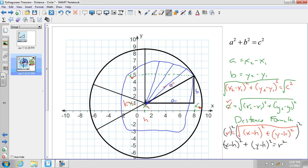So that is how the Pythagorean theorem is related to the distance formula, which is related to the standard form of the equation of a circle. Isn't that amazing?